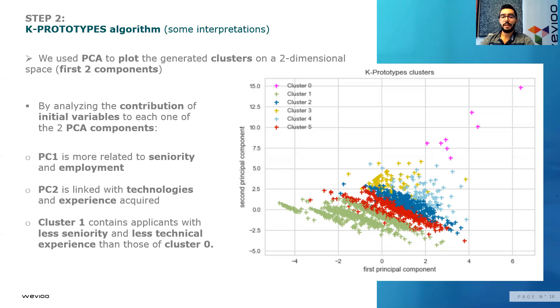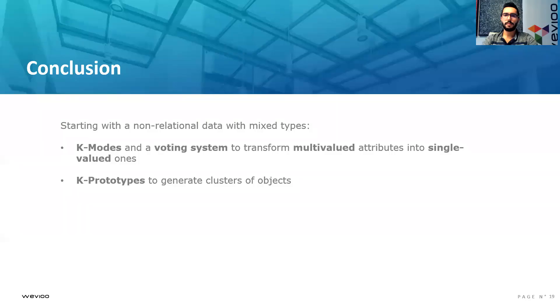Some of the interpretations that we made are, for example, cluster one contains applicants with less seniority and less technical experience than those of cluster zero.